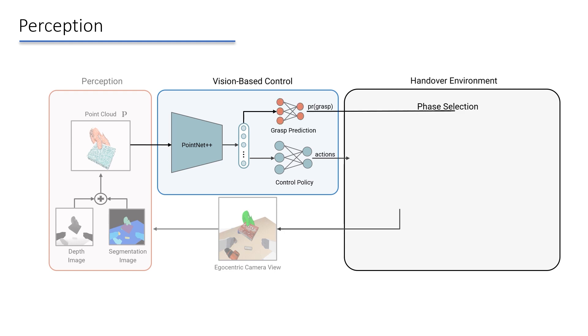A grasp prediction network takes the same feature embedding and decides whether the robot should stay in an approaching phase or transition into a grasping phase.